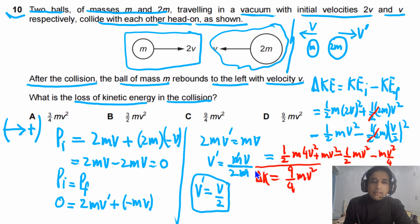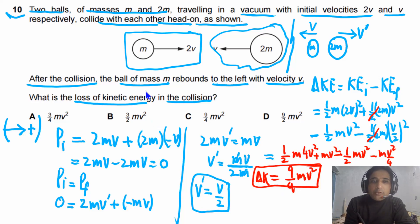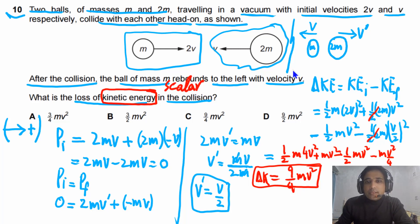The main concepts for this question are: first, conservation of momentum; second, understanding loss of kinetic energy. Remember that kinetic energy is a scalar quantity, so you do not need to worry about direction. Simply calculate the difference in kinetic energies and that equals the loss in kinetic energy.